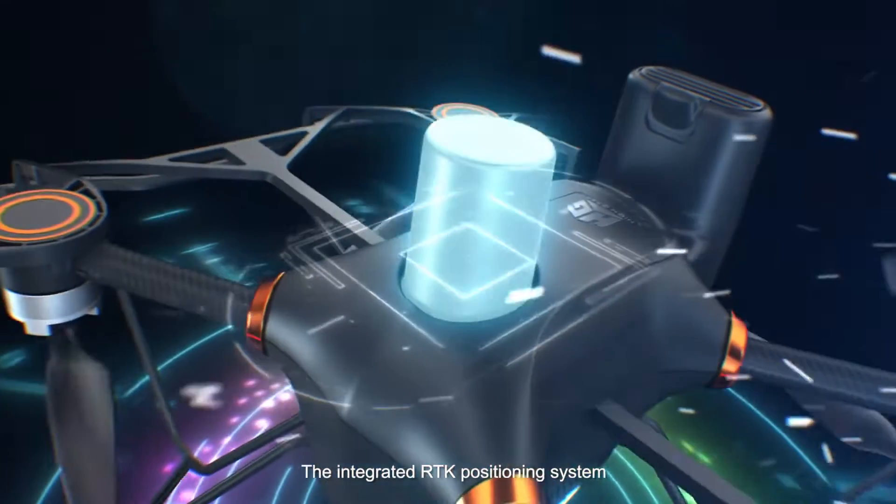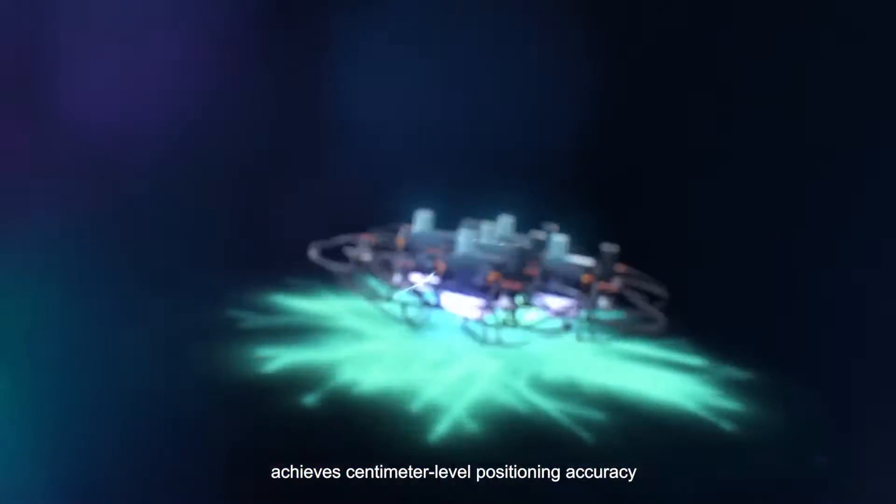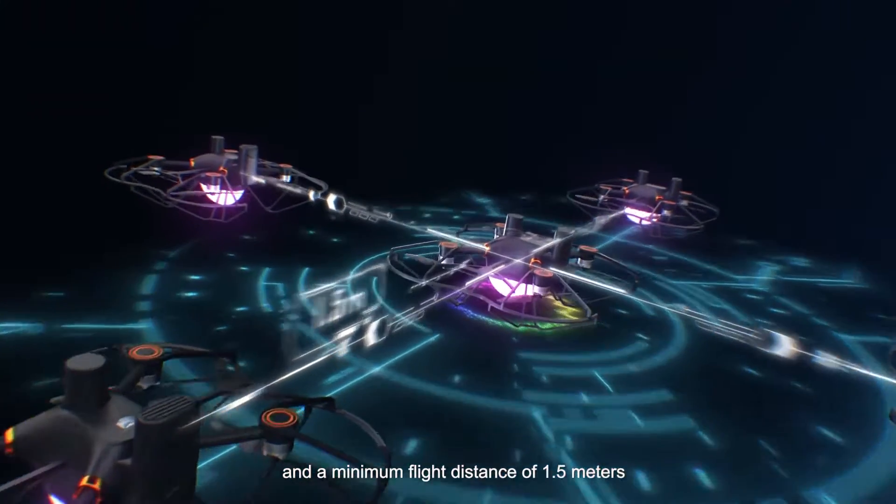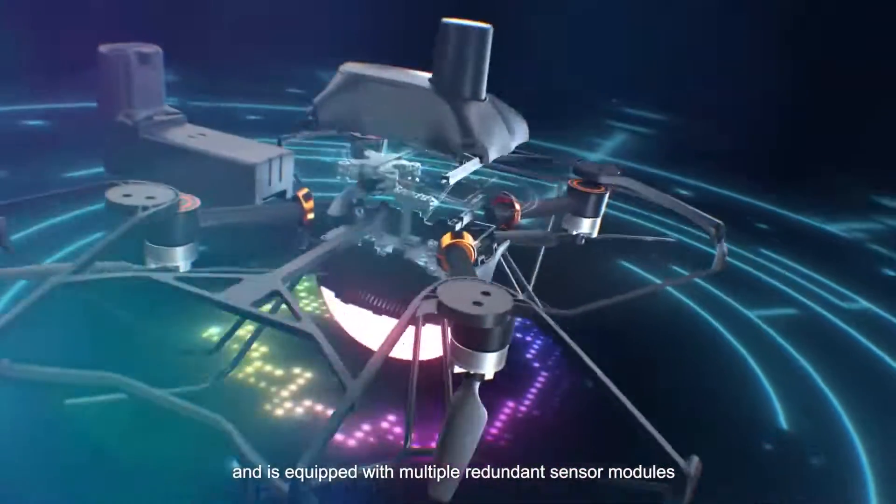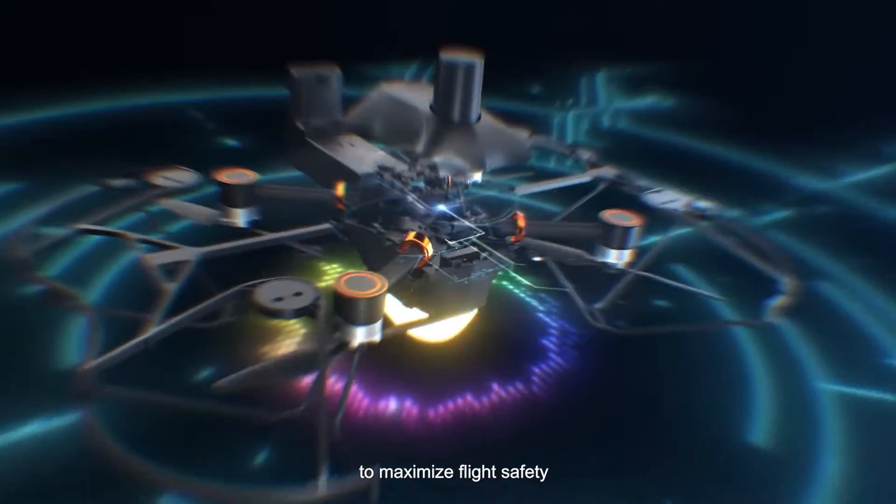The integrated RTK positioning system achieves centimeter-level positioning accuracy and a minimum flight distance of 1.5 meters, and is equipped with multiple redundant sensor modules to maximize flight safety.